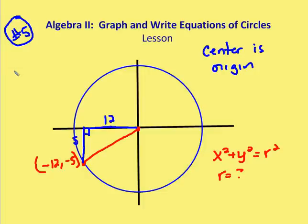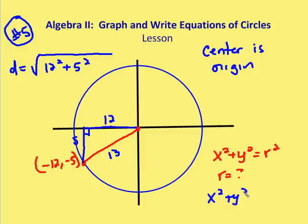And if I, again, take the distance formula, which is a rewriting of the Pythagorean theorem, I have the distance equal to the square root of 12 squared plus 5 squared, and that should equal 13. So now I rewrite the equation as x squared plus y squared is equal to 13 squared, or 169.